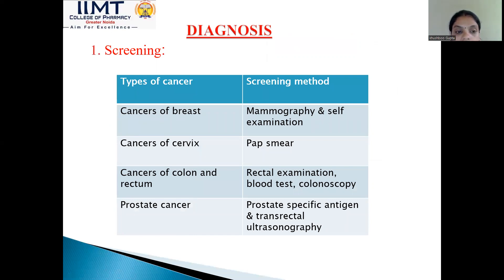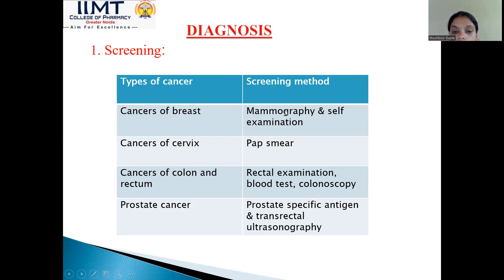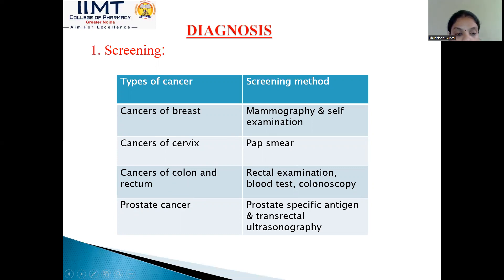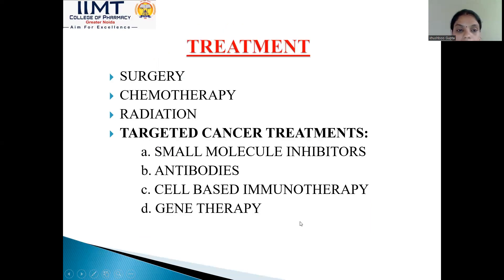Diagnosis of cancer: First, there is screening. For cancer of breast, mammography and self-examination are done. For cancer of cervix, the Pap smear technique is used. For cancer of colon and rectum, rectal examination, blood test, and colonoscopy are done. For prostate cancer, prostate-specific antigen testing and trans-rectal ultrasonography are performed.